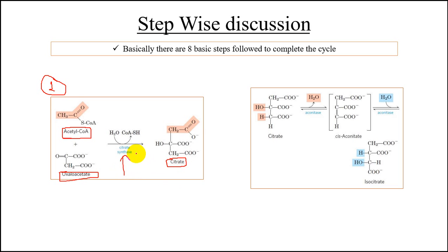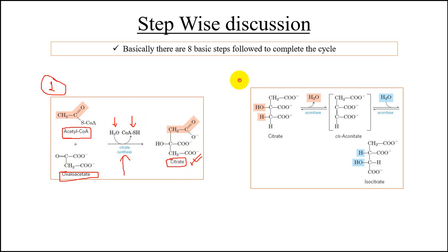A water molecule attacks the acetyl group, leading to the release of coenzyme A from the complex. The final product is citrate. This is the first step of the TCA cycle.